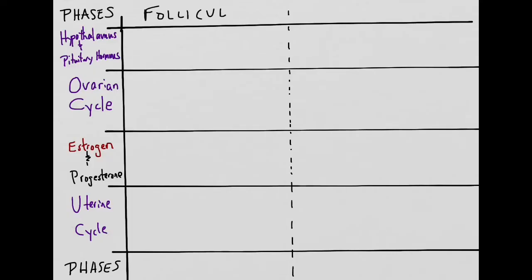The follicular phase begins on day zero and goes all the way to ovulation. The luteal phase is the phase that occurs after ovulation.